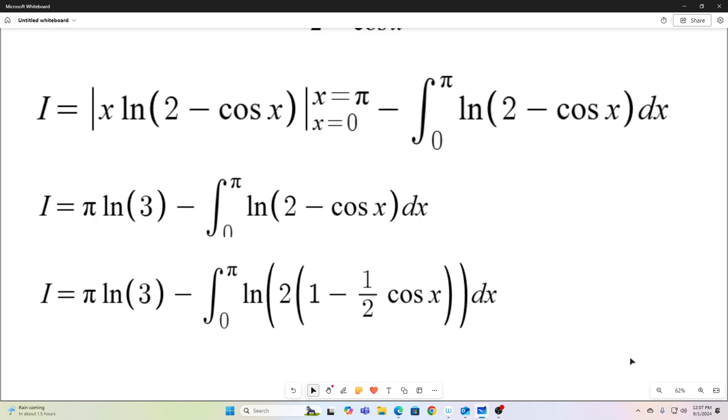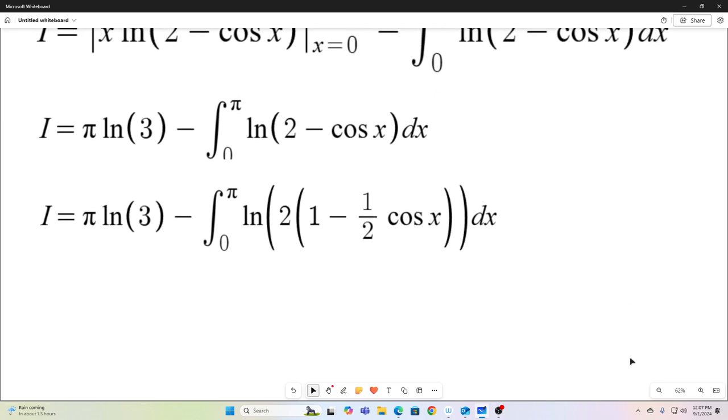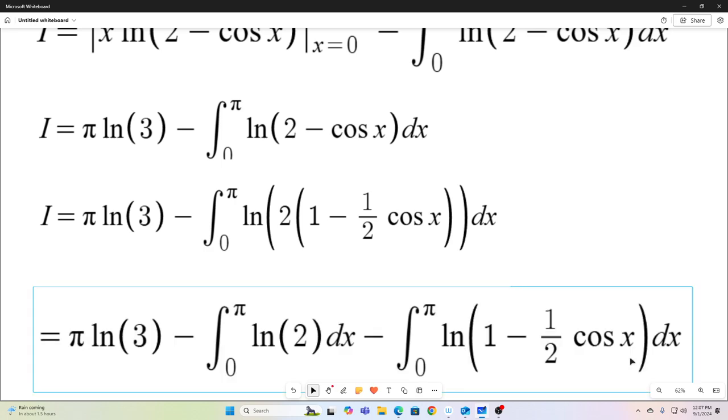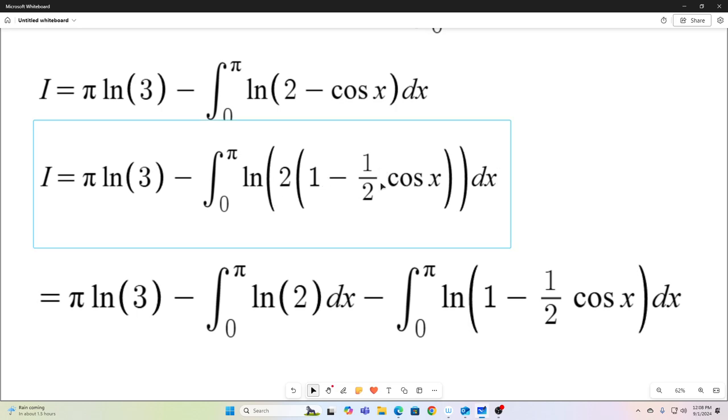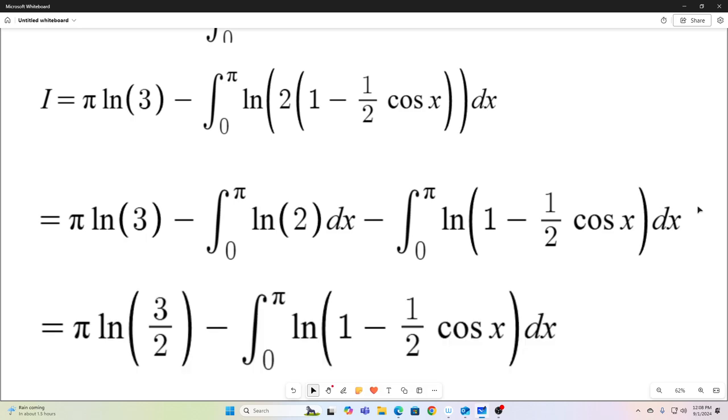All right, and now I'm going to do something that might seem a little bit strange at first. I'm going to rewrite that 2 minus cos x as a 2 times 1 minus 1 half cos x. That's just to make our reparameterization a little bit easier when it comes down to it. So next, I'm just going to split that integral up using the properties of logarithms like this. This becomes natural log 2 plus natural log 1 minus 1 half cos x. So there shouldn't be any problem there. And then I just evaluated this integral right here and combined it with this π natural log 3 to just give us π natural log 3 halves minus this integral, of course.